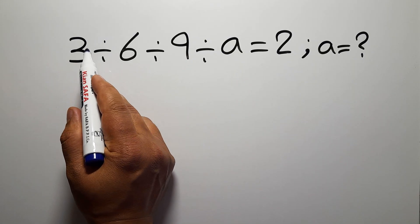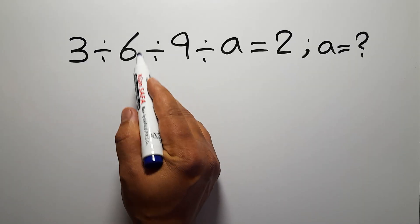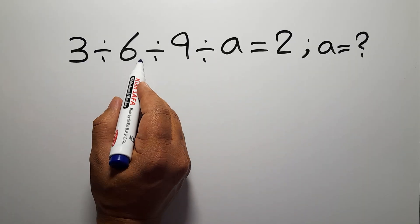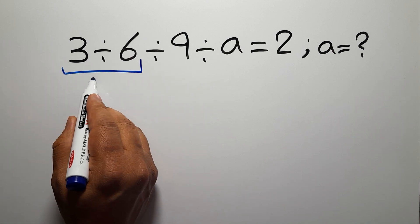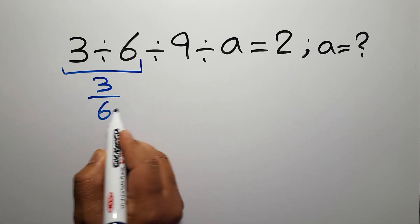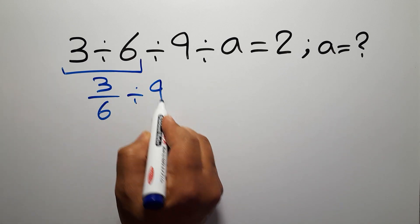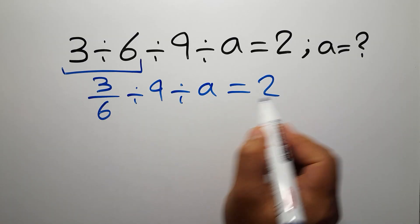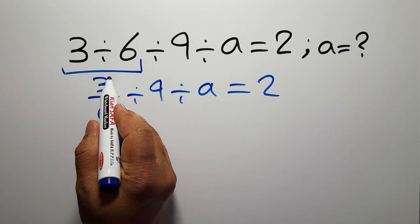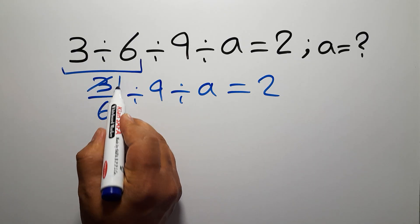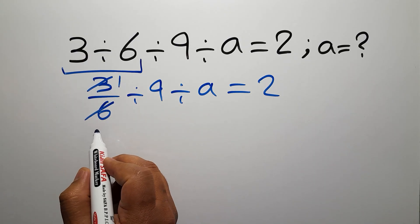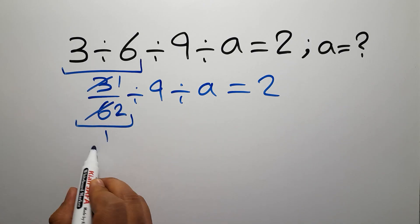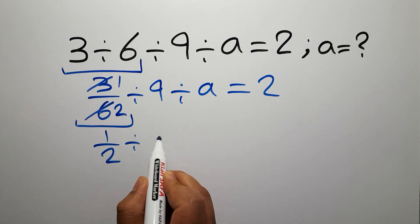So first we do this division, then this division, and finally this division. 3 divided by 6 can be written as 3 over 6, then divided by 9, divided by a, equals 2. Now 3 divided by 3 gives us 1, and 6 divided by 3 gives us 2, so we have 1 over 2.